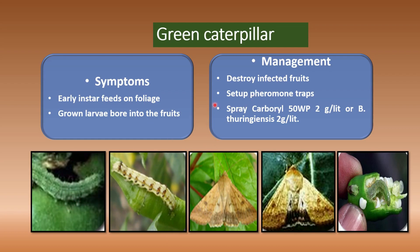Additional management for green caterpillar: set up pheromone traps using Helilure at 15 per hectare. You can also spray carbaryl 50% wettable powder at 2 grams per liter, or Bacillus thuringiensis at 2 grams per liter. Alternatively, prepare a poison bait with carbaryl 1.2 kg, rice bran 12.5 kg, jaggery 1.25 kg, and water 7.5 liters per hectare.